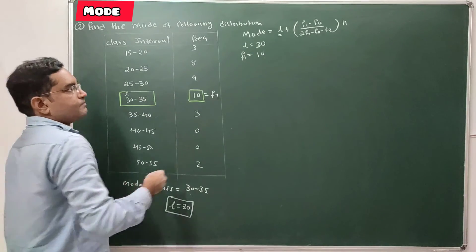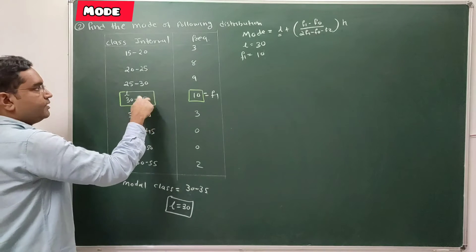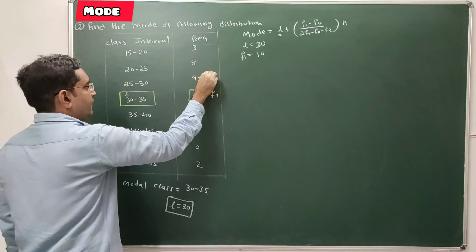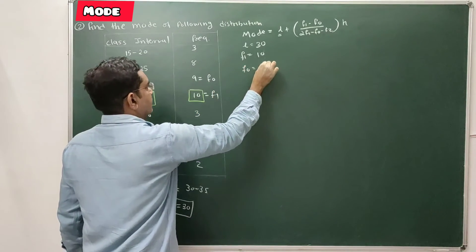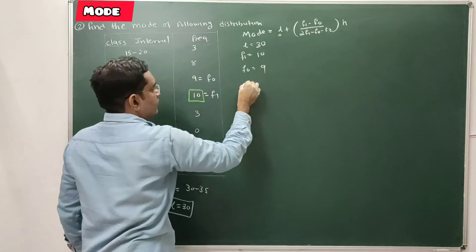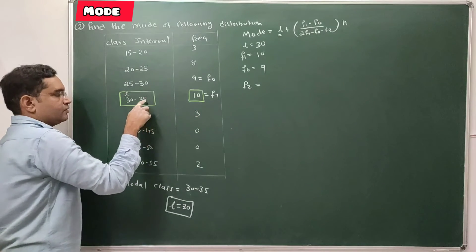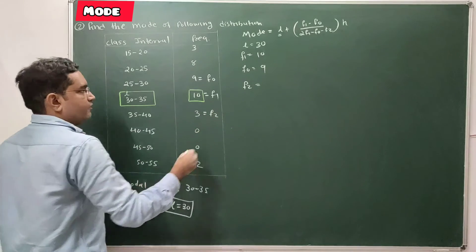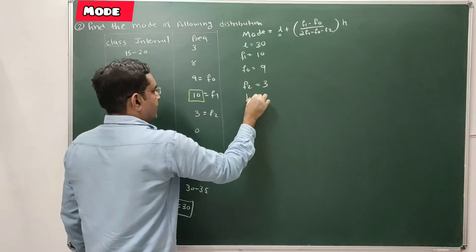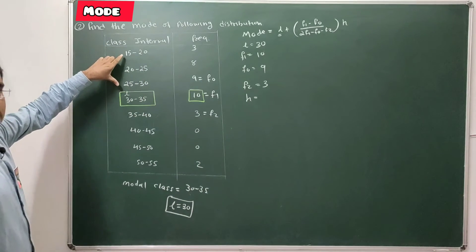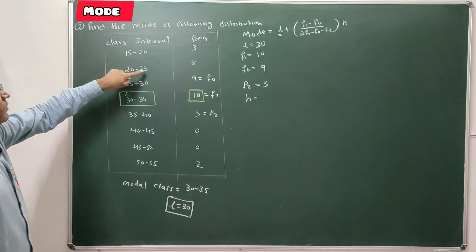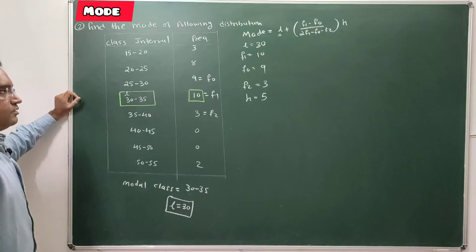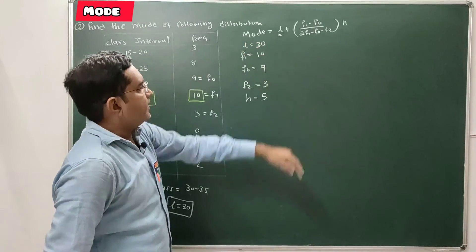F0 is the frequency of the class preceding the modal class, which is 25 to 30, with frequency 9. F2 is the frequency of the class succeeding the modal class, which is 3. H, the class length, is 5 — equal for all classes.